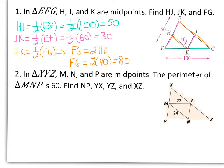Okay, number 2, it says triangle XYZ, M, N, and P are midpoints. The perimeter of triangle MNP is 60. We want to find NP, YX, YZ, and XZ. Okay, well, first off, my midsegments MP and MN are marked. I know my perimeter is 60, so for right now I'm going to call NP, X.